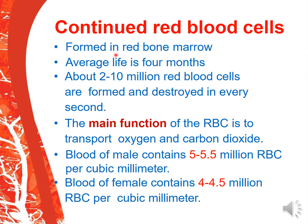RBCs are formed in red bone marrow. Their average lifespan is 4 months. About 2 to 10 million RBCs are formed and destroyed every second. The main function of RBC is to transport oxygen and carbon dioxide. The normal count of RBC in males is 5 to 5.5 million, and in females it is 4 to 4.5 million.